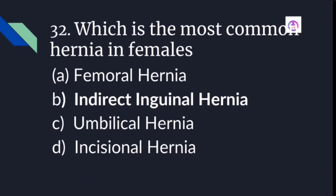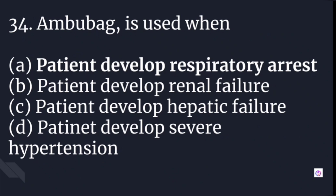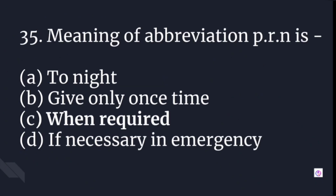The most common hernia in females is indirect inguinal hernia. The priority nursing diagnosis in a patient with pneumonia is impaired gas exchange. An Ambu bag is used when a patient develops respiratory arrest. The abbreviation PRN means 'when required' — its full form is pro re nata, meaning medication is given whenever required.